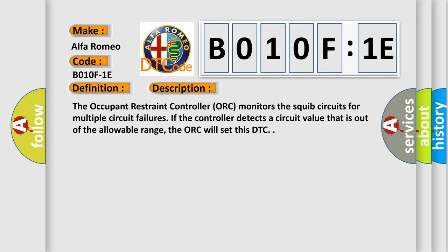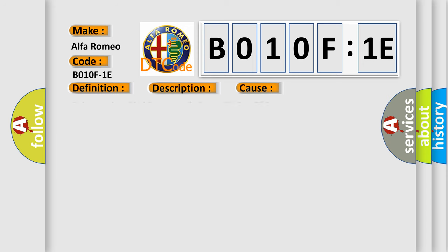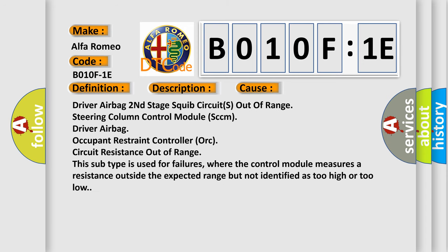And now this is a short description of this DTC code. The occupant restraint controller ORC monitors the squid circuits for multiple circuit failures. If the controller detects a circuit value that is out of the allowable range, the ORC will set this DTC. This diagnostic error occurs most often in these cases.